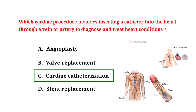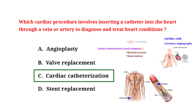Cardiac catheterization involves inserting a catheter into the heart through a vein or artery to diagnose and treat heart conditions, as it allows doctors to directly assess the heart and blood vessels. This procedure helps in diagnosing issues like blocked arteries, heart defects, and measuring pressures within the heart. It can also be used for treatments such as opening blocked arteries or repairing heart defects. Other names include coronary angiography and cardiac cath.